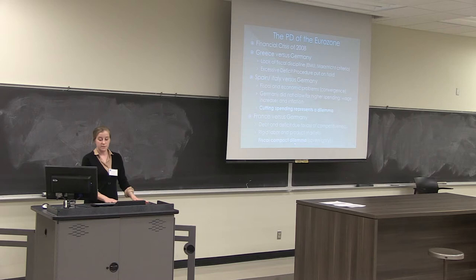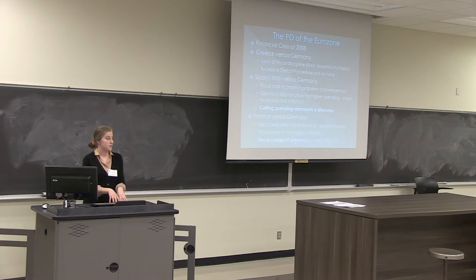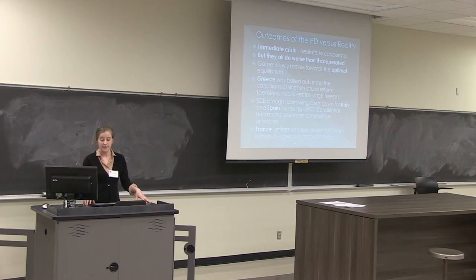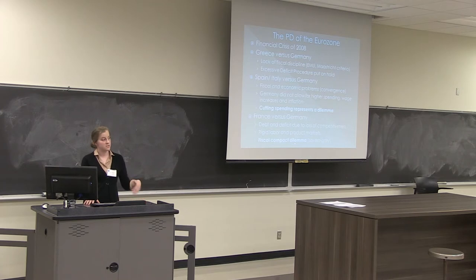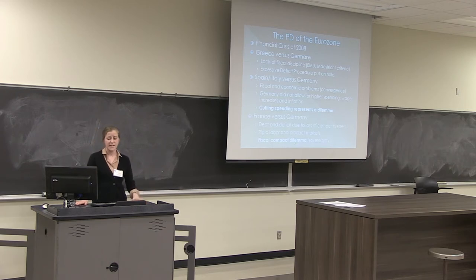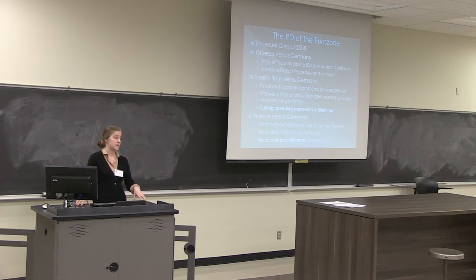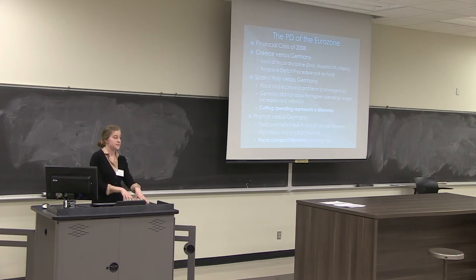On the side of Spain and Italy versus Germany, there is a major problem of economic divergence. When the economic and monetary union was formed, countries were expected to converge in terms of spending, wages, and inflation — but that didn't happen. Spain and Italy were not able to reach German standards, and Germany was not willing to adjust their spending. So Spain and Italy face a dilemma: cut spending as Germany demands in order to get bailout funds, which risks pushing their economies further into recession, or refuse and risk financial collapse.